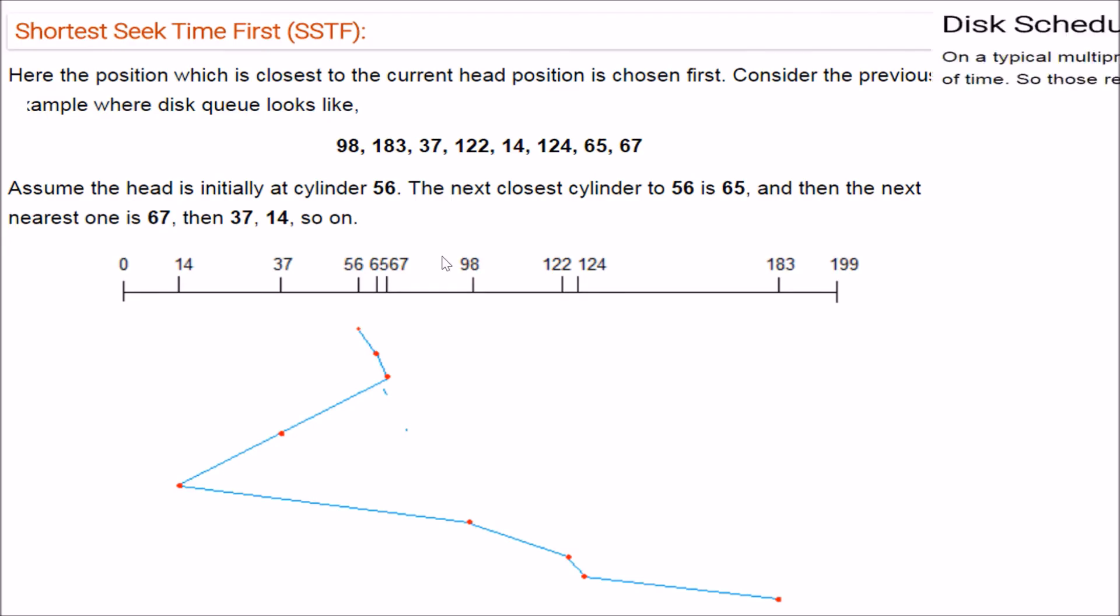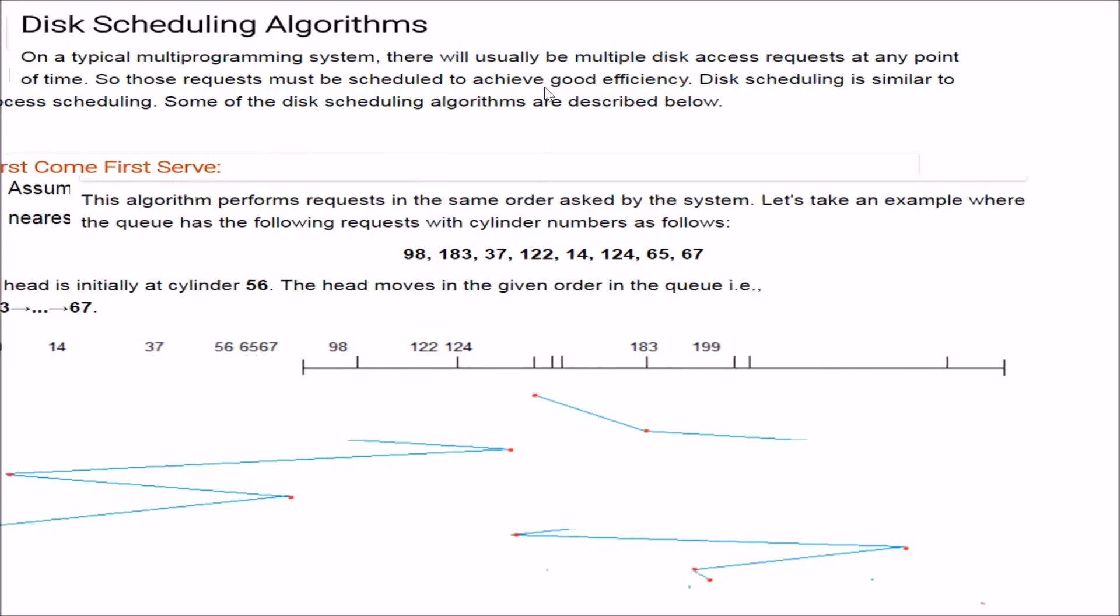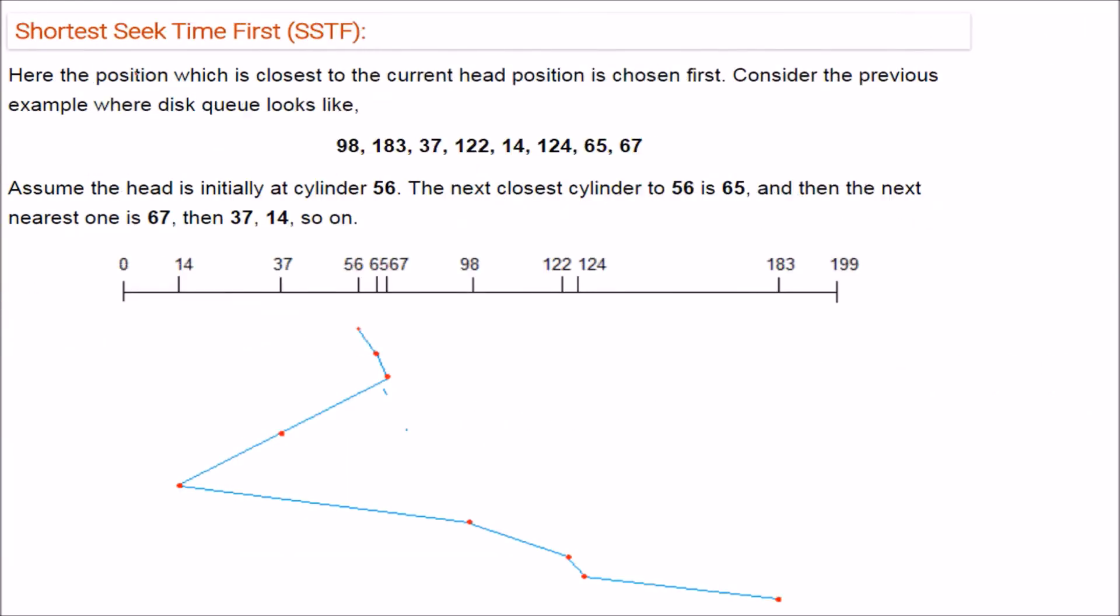Then we have Shortest Seek Time First. So what happens here? The head is moving quite a lot. See from 183 to 37, it's quite a distance. Then again going back. It is moving here and there. So the efficiency is less. Thus the seek time, the rotational latency, all this will be high. For that we need some more algorithms.